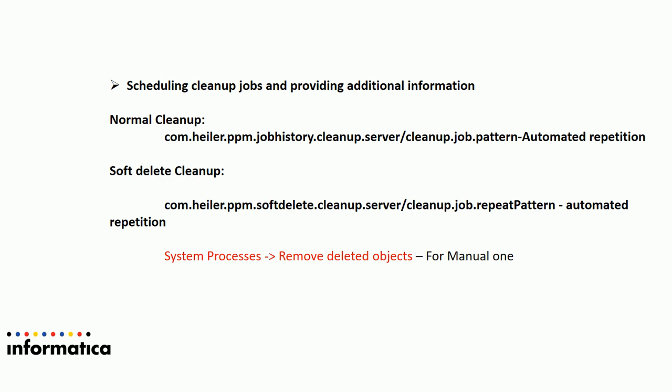Next is scheduling cleanup jobs. Normal cleanup jobs use job type identifiers as mentioned, but when the normal cleanup job runs depends on the parameter com.hello.ppm.jobhistory.cleanup.server.pattern. By default it is set to run at 12 AM midnight, meaning every 24 hours it checks which entries need to be soft deleted based on the job type identifiers you defined. The cleanup job pattern performs the normal cleanup only on those specified job type identifiers.